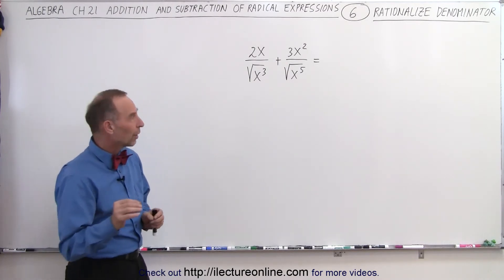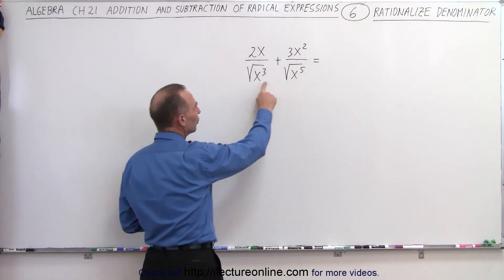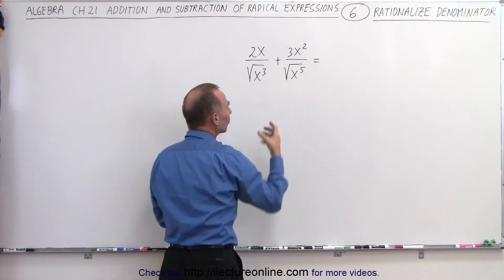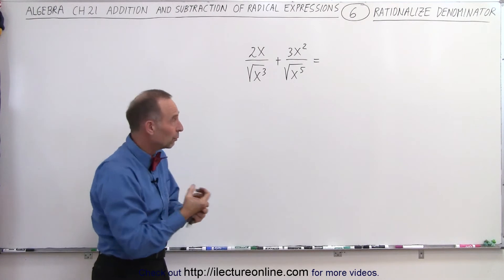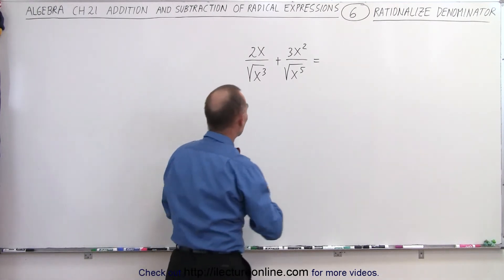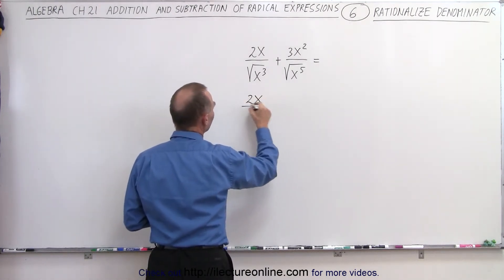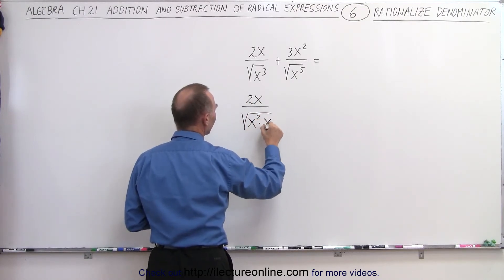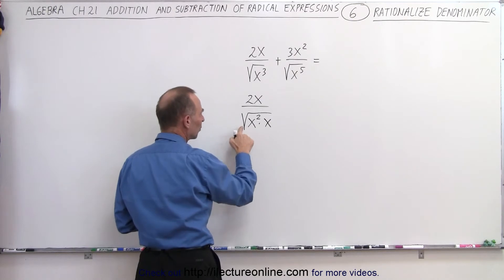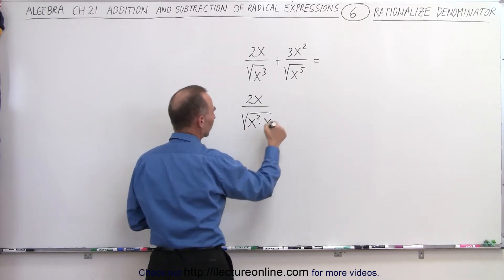First, what we're going to do is rewrite these two denominators in such a way that we can actually take the square root of something there. The following thing will look like this: 2x divided by the square root of x squared times x. You can see that you can take the square root of x squared in the denominator and just be left with an x.